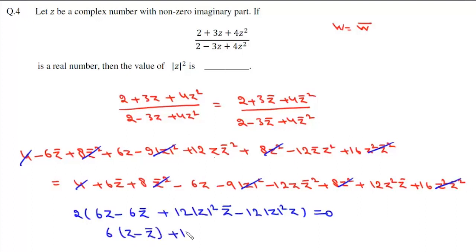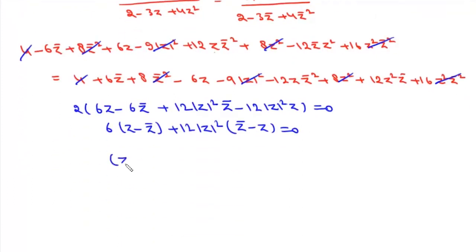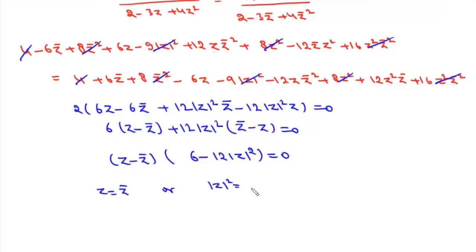Taking 6 common from the first part and 12|z|² common from the second, we get (z - z̄)(6 - 12|z|²) = 0. Either z = z̄, meaning z is purely real — but the problem states z has non-zero imaginary part, so this is not possible. Therefore the only valid condition is |z|² = 1/2, which is 0.5.